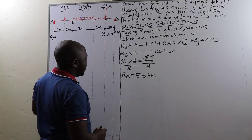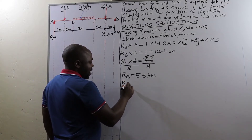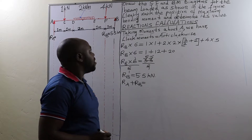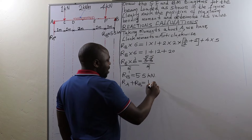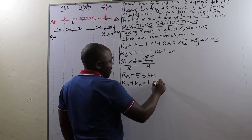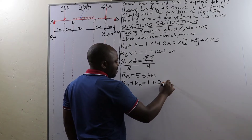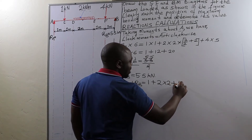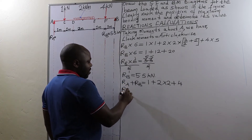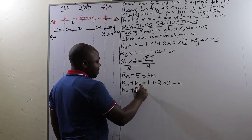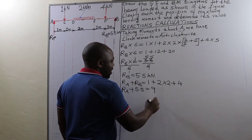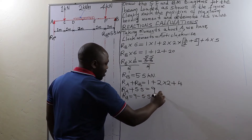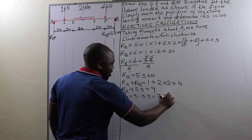We now determine the value of reaction at A. Reaction at A plus reaction at B equals the sum of downward acting forces, which in this case we have 1 kilonewton at point C, the UDL between E and D converted to a point load by multiplying its value by the span, plus another point load of 4 kilonewtons at point F. So reaction at A plus 5.5 kilonewtons equals 9 kilonewtons. Therefore, RA equals 9 minus 5.5, which gives us 3.5 kilonewtons.